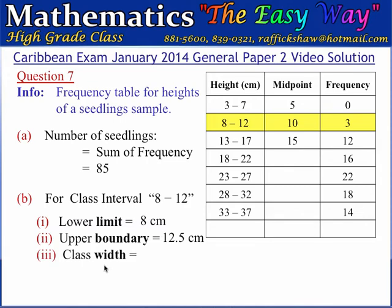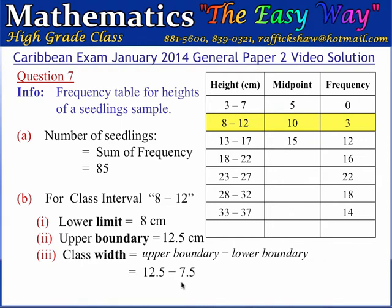The third part wants us to state the class width, which is defined as the upper boundary value minus the lower boundary value. This represents the range of values between which a seedling can be placed in the class. So it is 12.5 cm minus 7.5 cm, which equals 5 centimeters. This matches the uniform distribution of the table — lower limits, upper limits, and midpoints all increase by 5 centimeters, confirming that the width of each class is 5 centimeters.